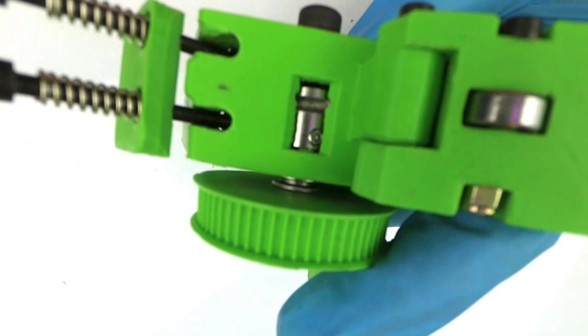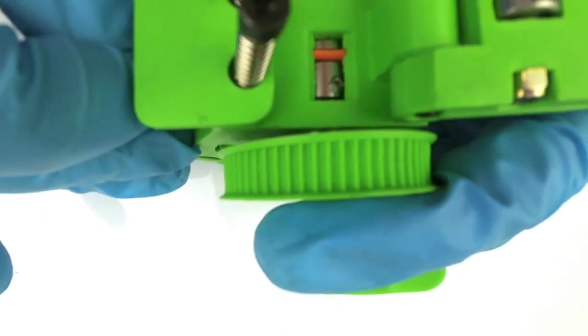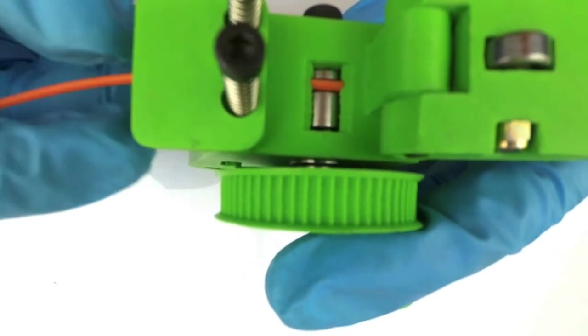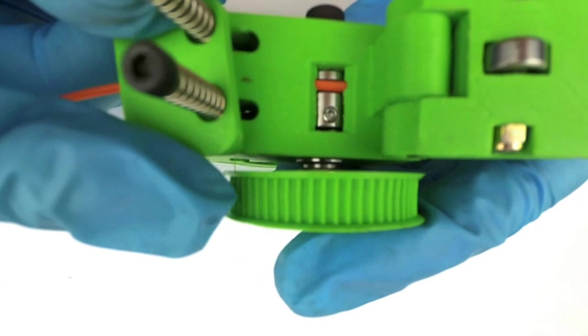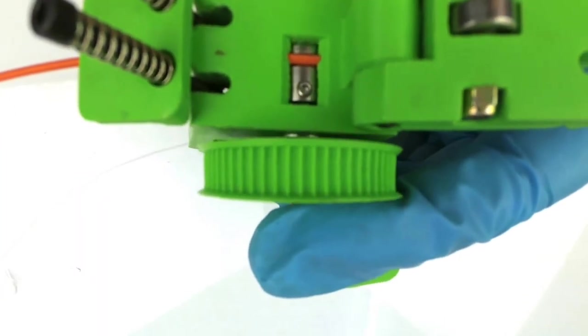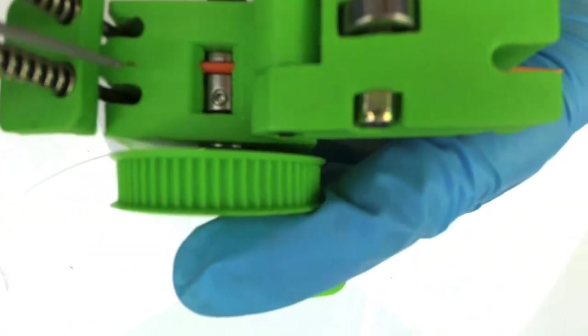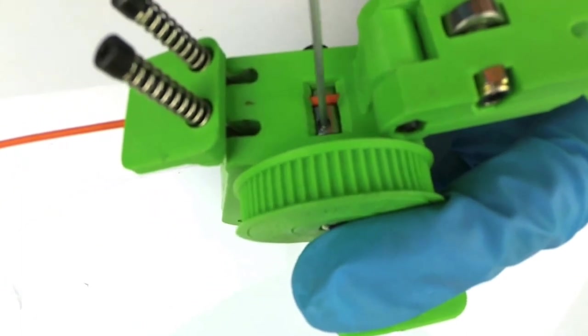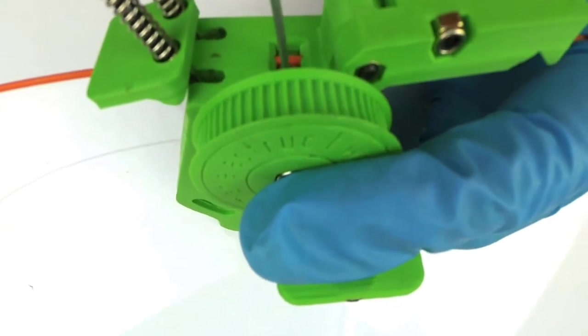But don't overtighten that screw. When it starts to be hard to turn, it's time to stop. Remember, any screw into plastic, never overtighten it or you will break it. Now it's okay.